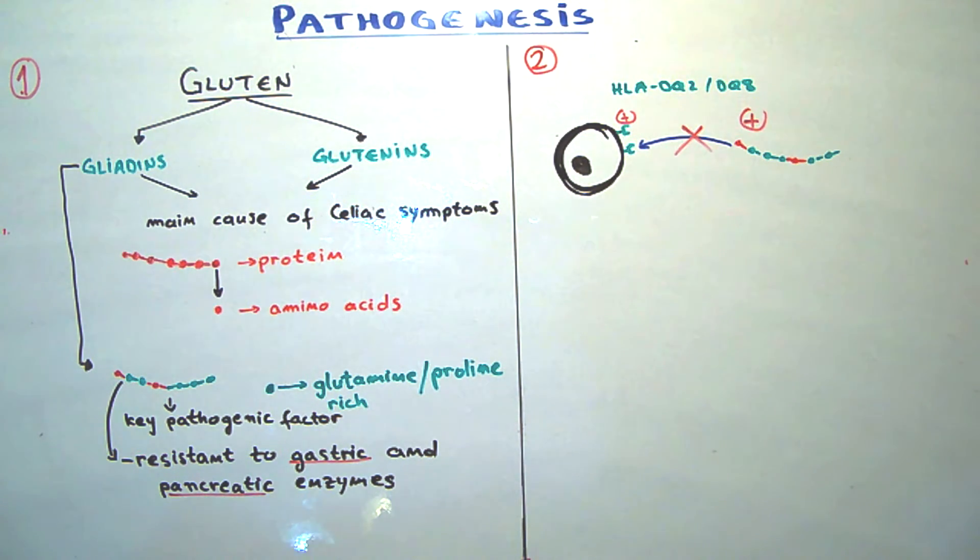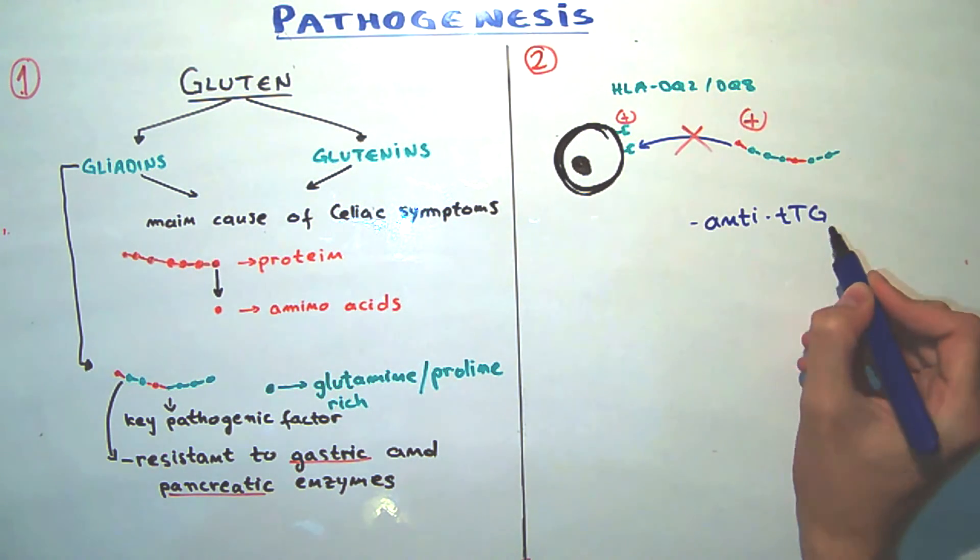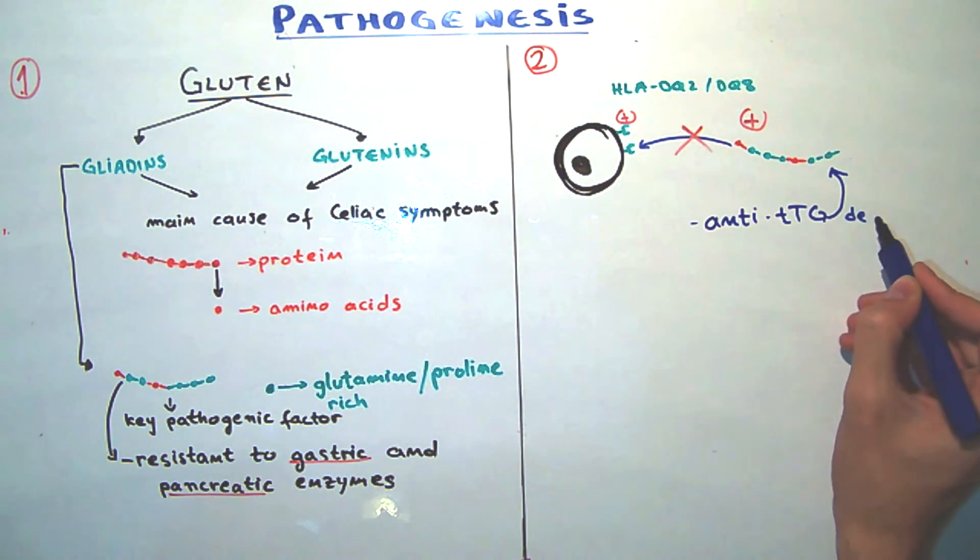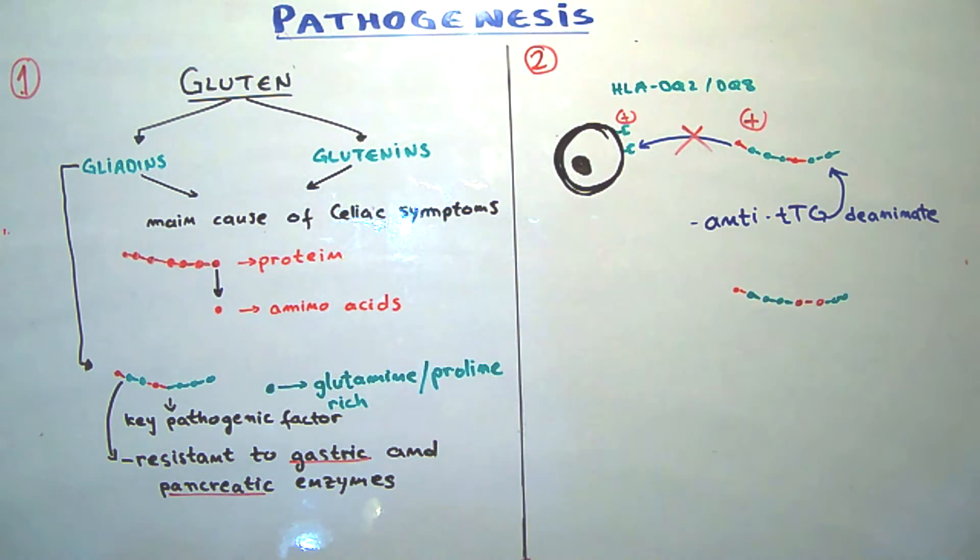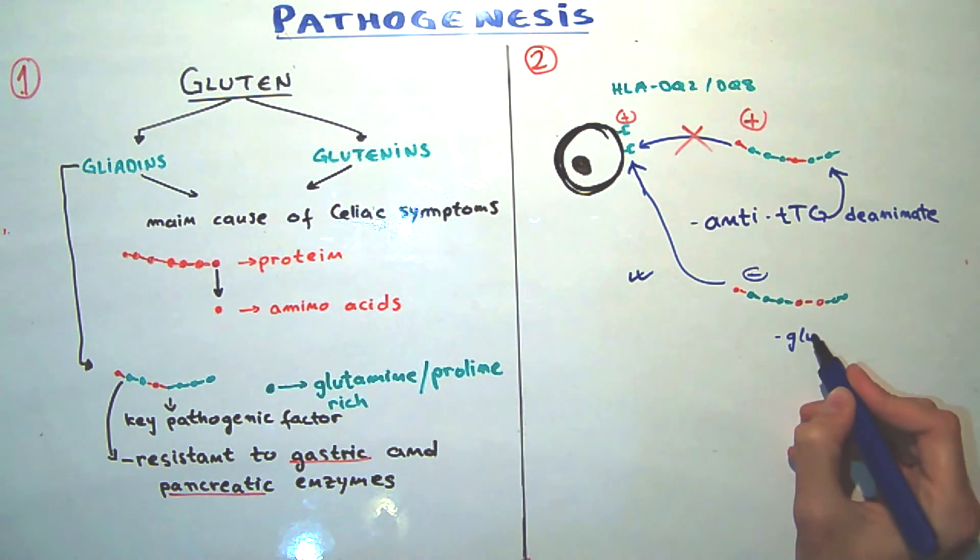Well, in this patient, as we mentioned earlier, there are antibodies to tissue transglutaminase, which can deaminate glutamine, converting glutamine to negatively charged glutamic acid. So now the bond is possible.